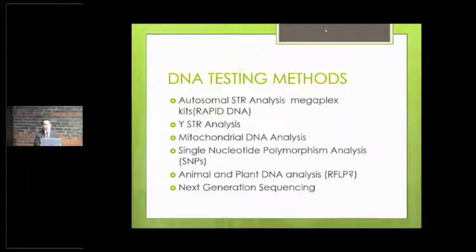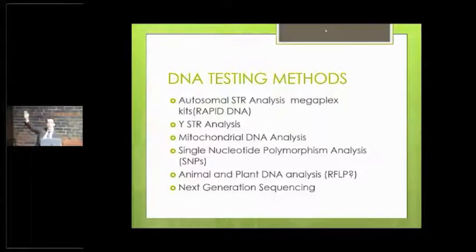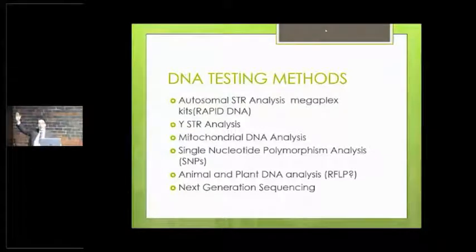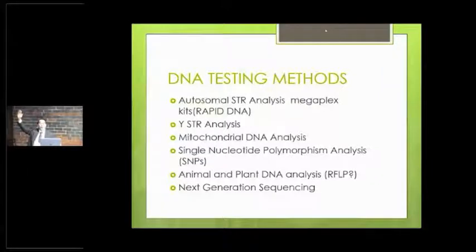Most of the time that autosomal STR analysis is not going to work on old samples just because of the age, but mitochondrial DNA testing most likely will be able to. The other type is single nucleotide polymorphisms, or SNPs. Has anybody here had AncestryDNA or 23andMe work done? Or who here is aware of those two companies?